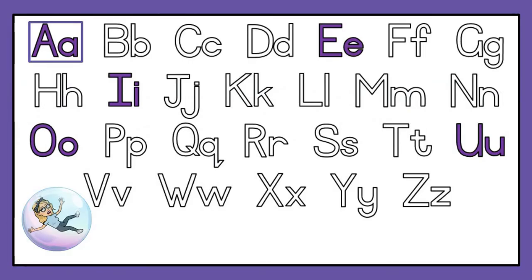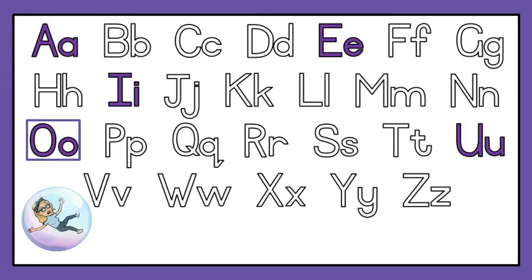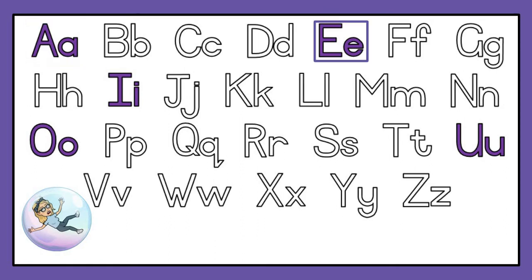Let's see who those troublemaker bubble letters are: A, E, I, O, U. Now this bubble letter A — his short sound is A as in apple, and his long sound is A as in apricot. The next troublemaker bubble letter is E. E for elephant — that is his short sound. His long sound is E as in event.